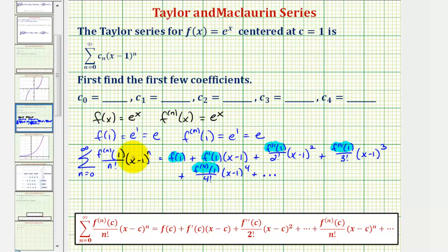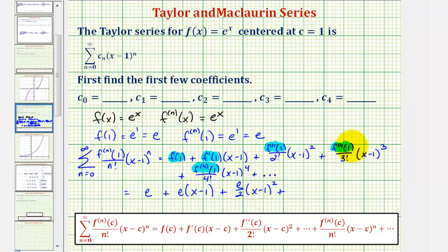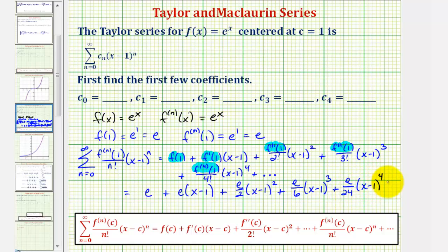Simplifying the Taylor series: f of one is e, plus f prime of one, which is e, times the quantity x minus one, plus f double prime of one is also e, so we have e divided by two factorial, or e divided by two, times the quantity x minus one squared, plus e divided by three factorial, which is six, times the quantity x minus one cubed, plus e divided by four factorial, which is 24, times the quantity x minus one to the fourth, and so on.